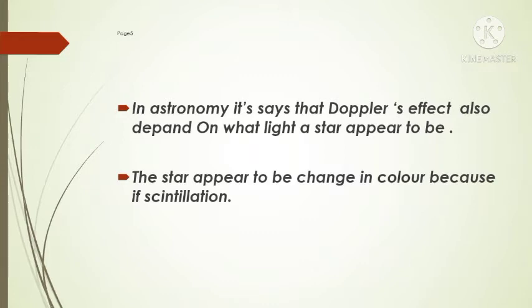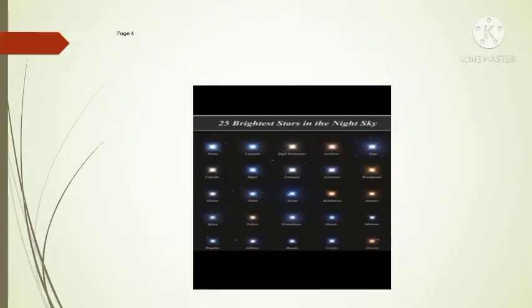The stars appear to change color. This is because of scintillation or twinkling as the light passes through the atmosphere of earth. As the air moves in and out, the starlight is refracted, often different colors in different directions. Because of this chromatic aberration, stars can appear to change colors when they are twinkling strongly. The star's color is critical for identifying the stars because it tells us the star's surface temperature in blackbody radiation scale. For example, the sun has a surface temperature of 5500 Kelvin, typically for yellow stars. In astronomy, it says that Doppler's effect also depends what light a star appears to be emitting.